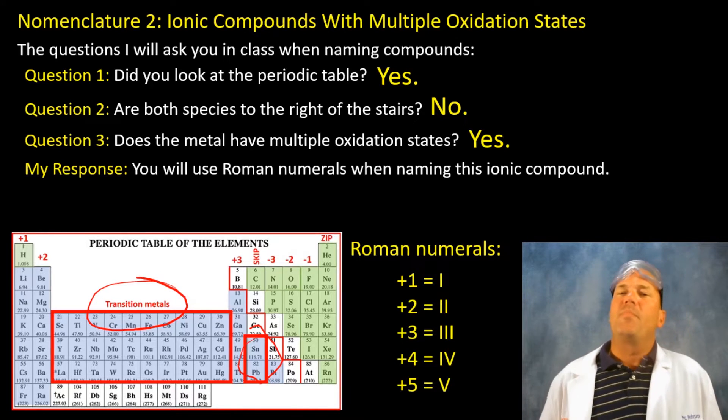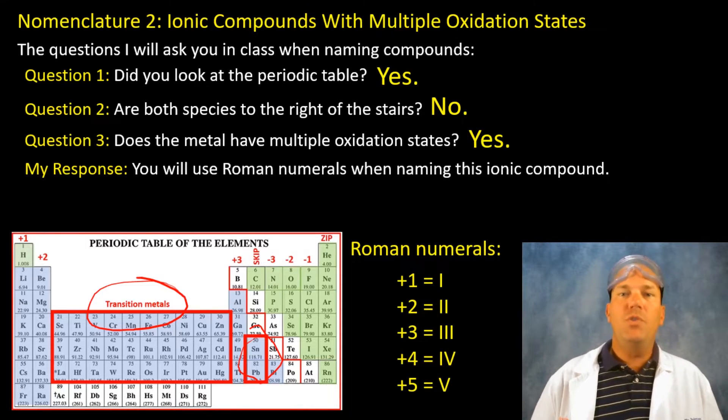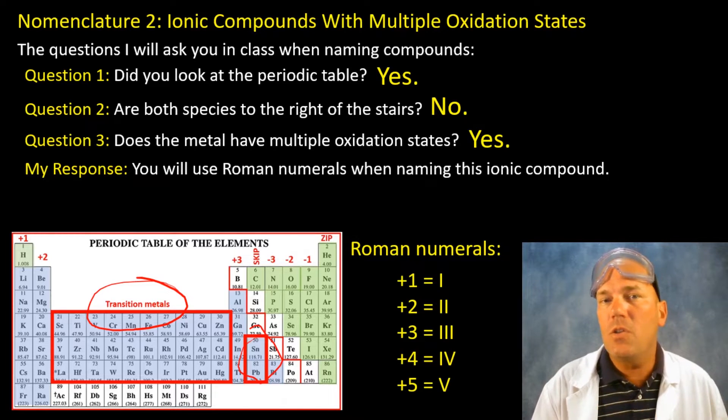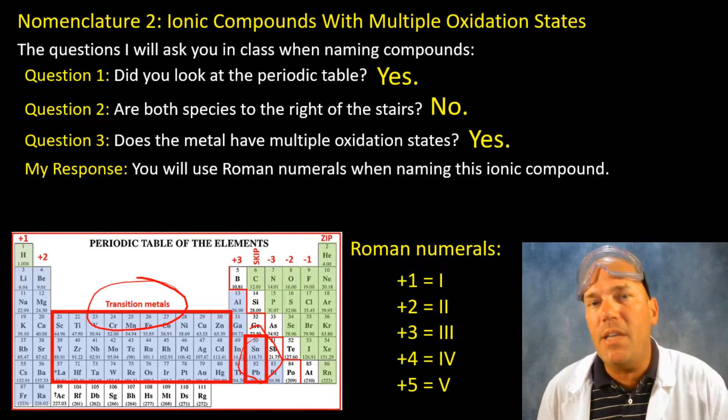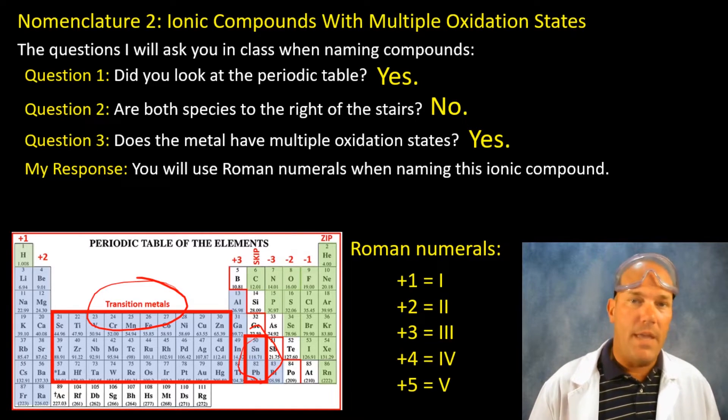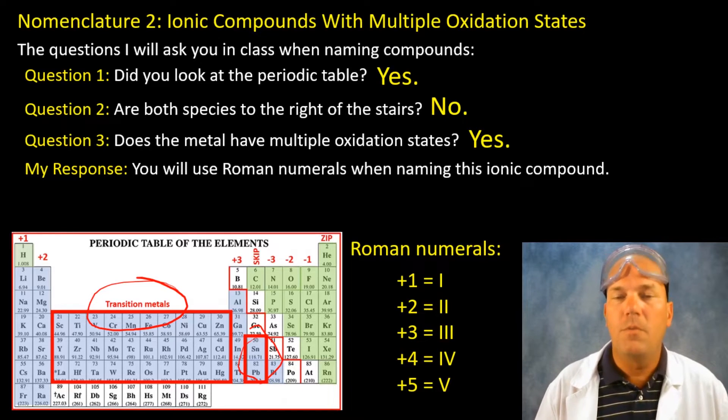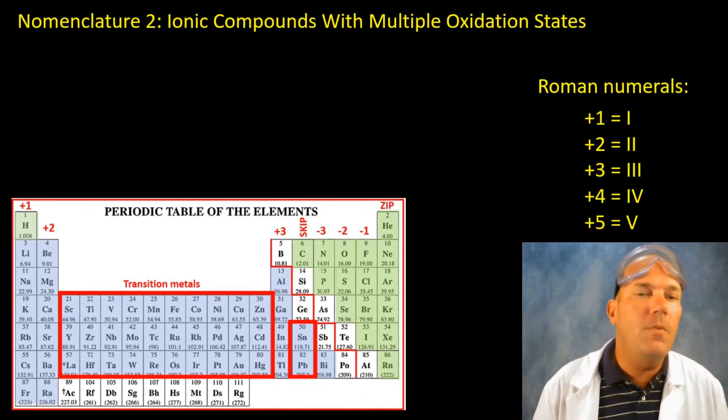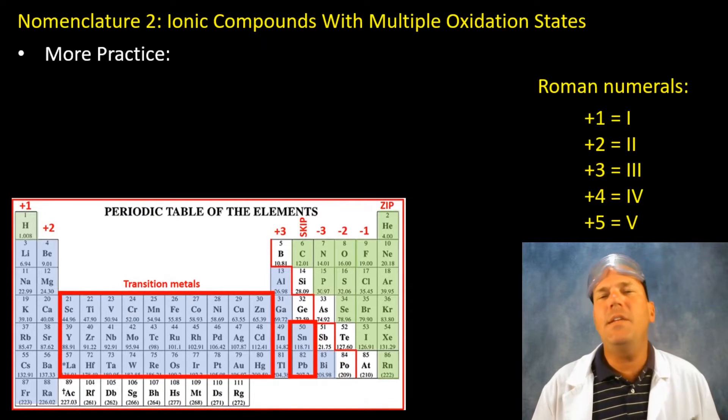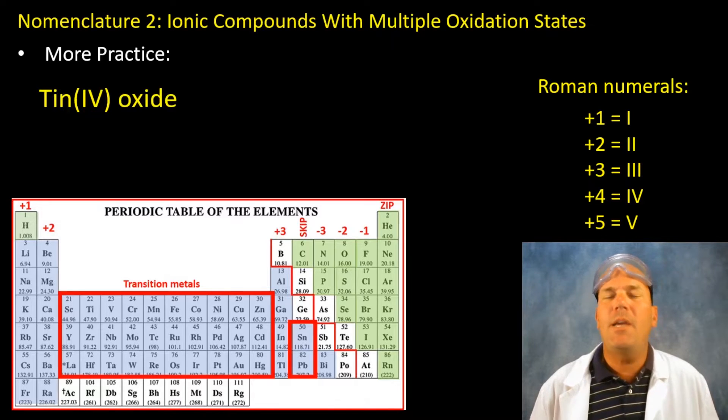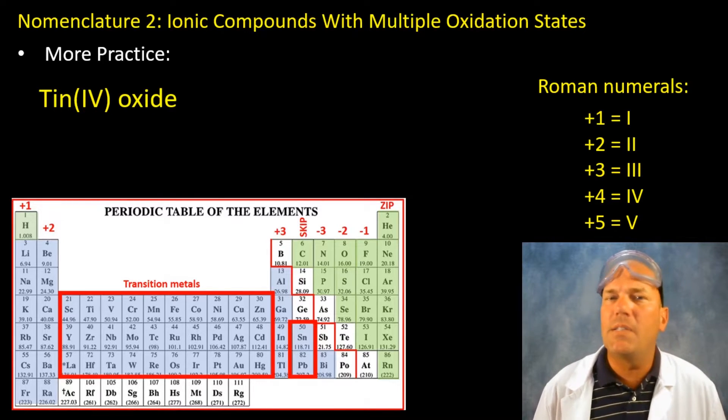Well that means that you will use roman numerals when you are naming this ionic compound and when you are articulating its name you will use the roman numeral. Lead two, lead four when actually writing out the name of the formula. Okay let's get a little practice here and then we'll call it good with naming ionic compounds that have multiple oxidation states.